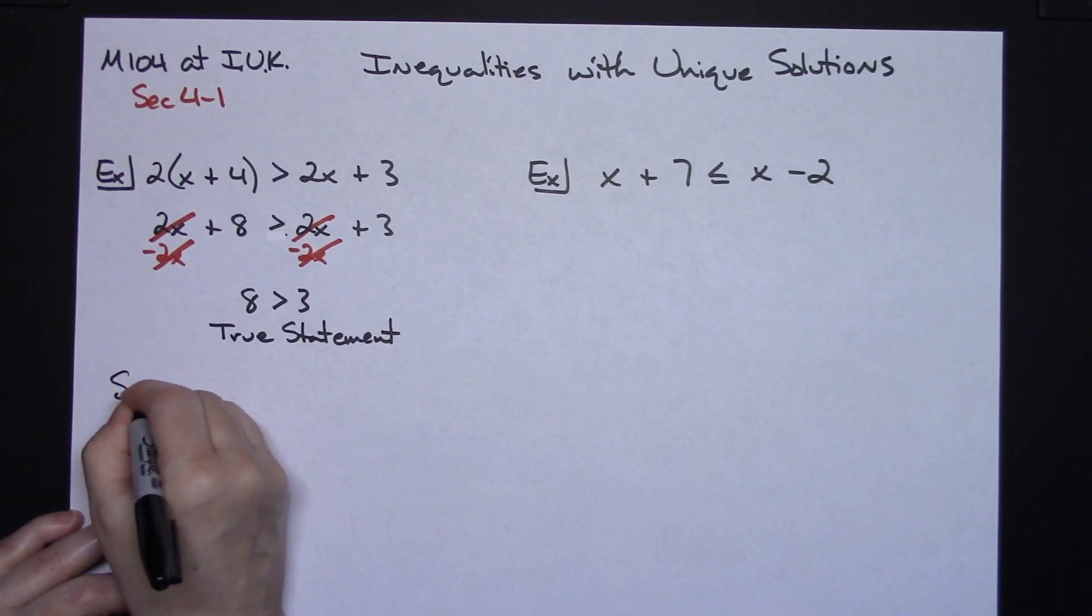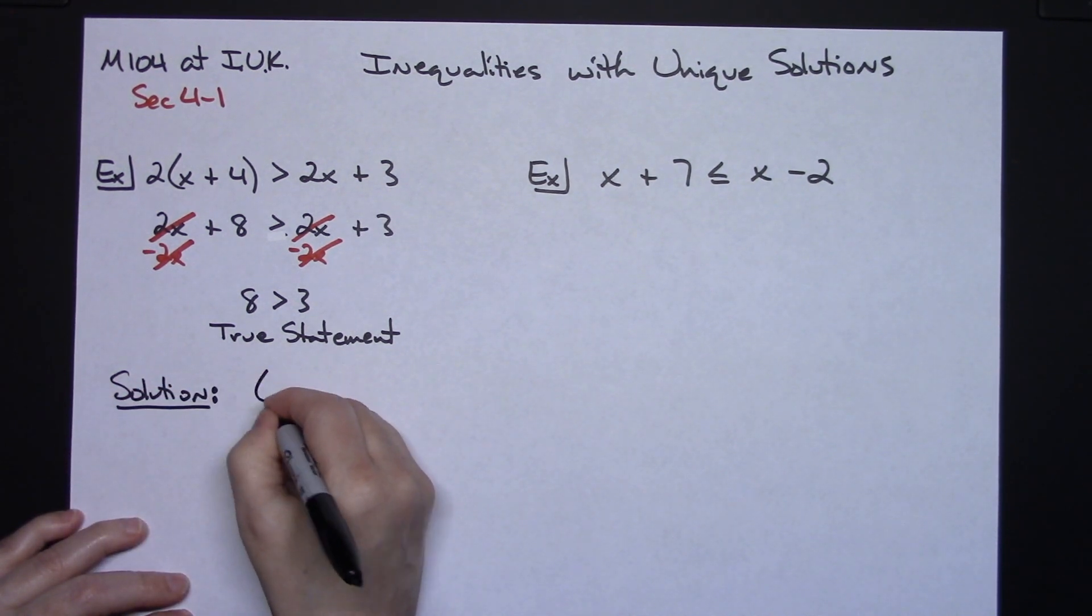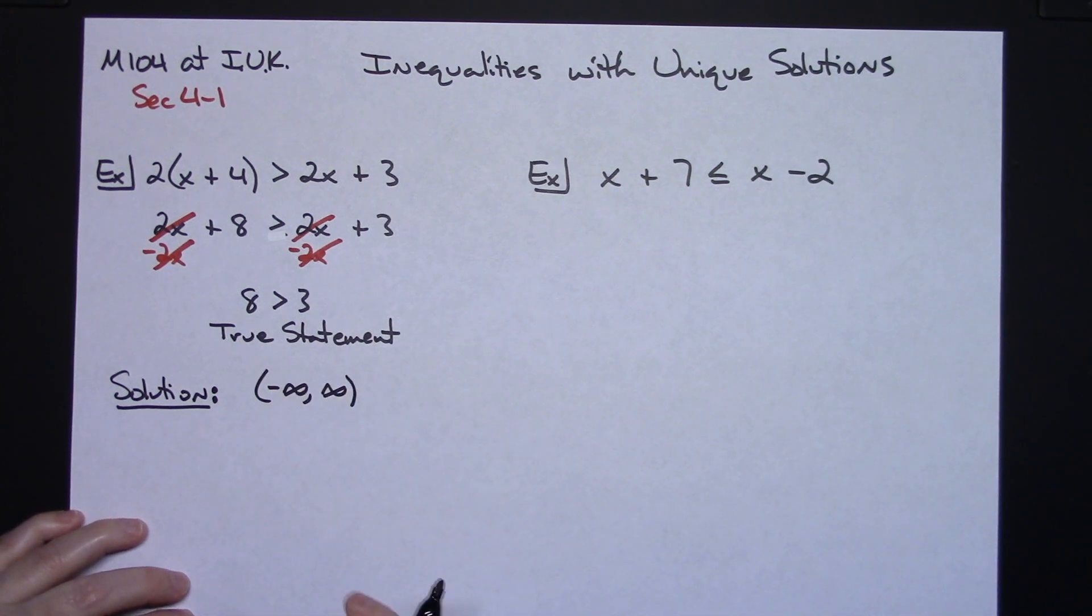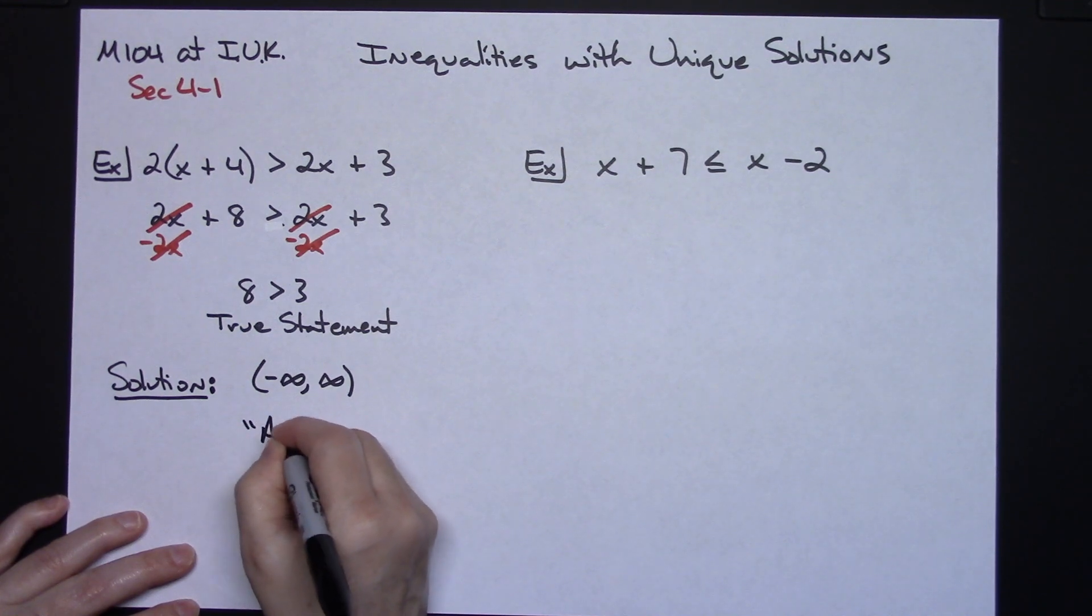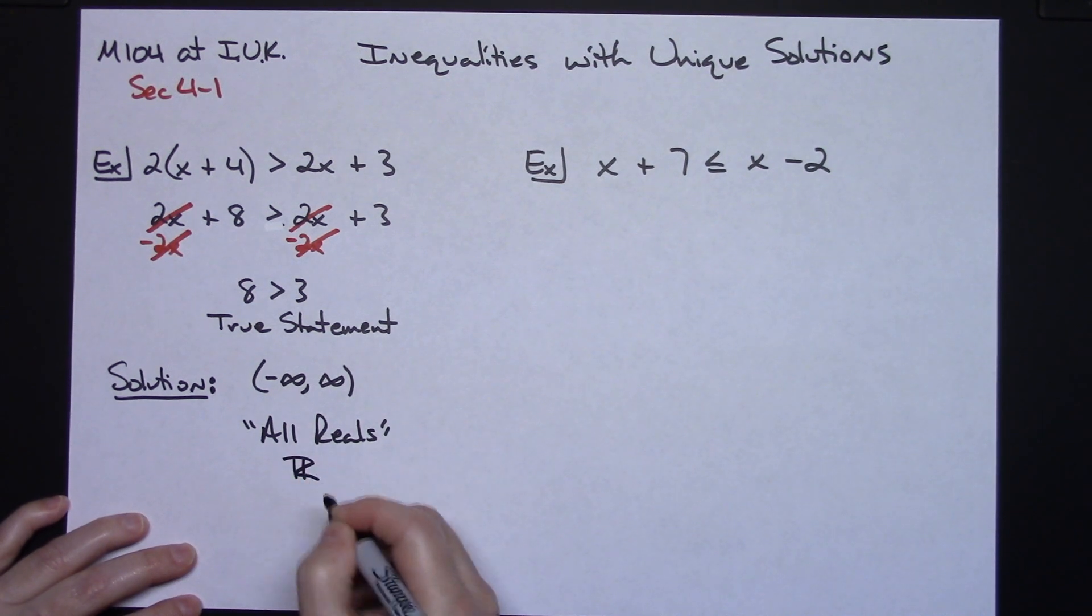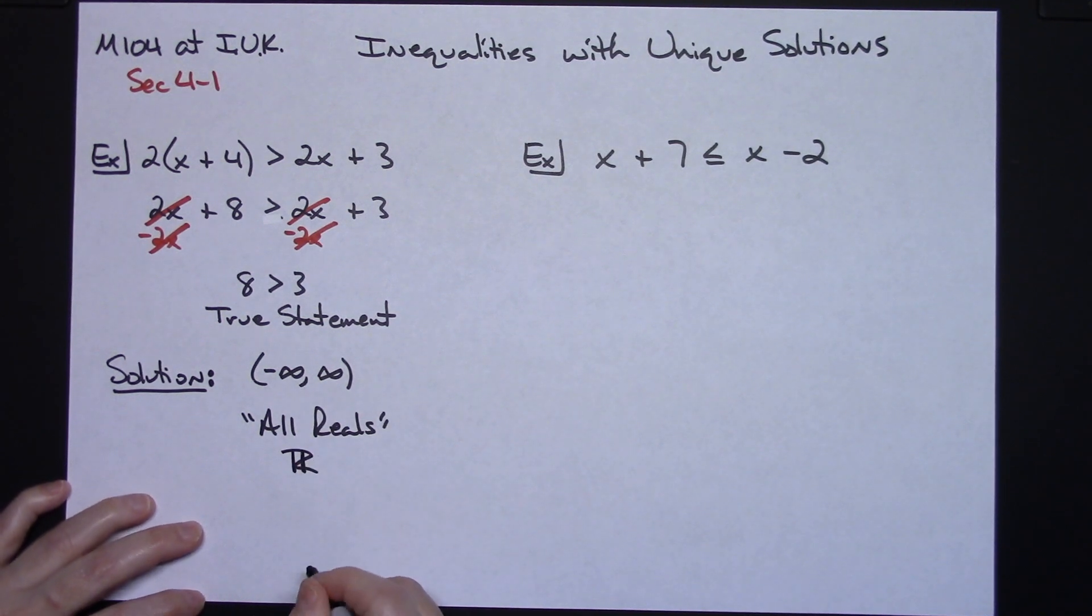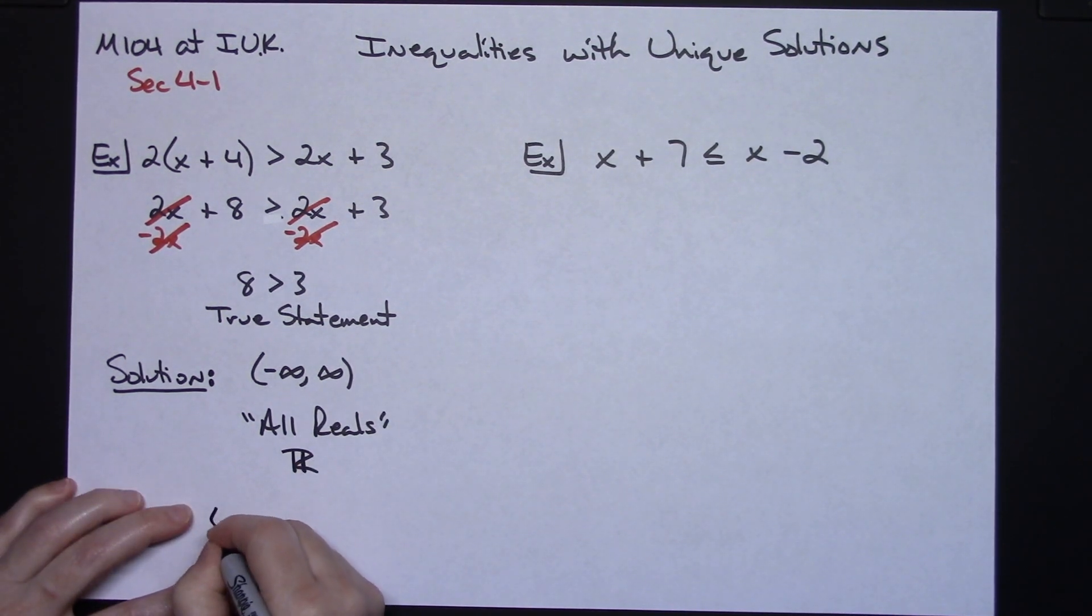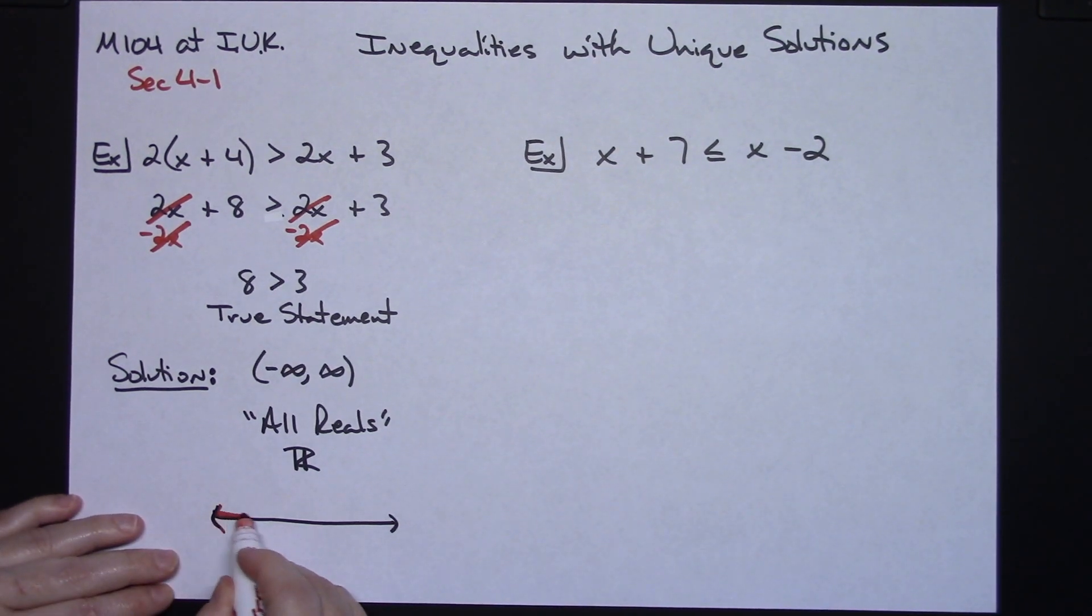So my solution is going to be all real numbers. We have a variety of different ways that we could do this. We could say all real numbers negative infinity to positive infinity in interval notation. I could also write the words all reals, or some people will allow you to do the double R bar. And if you were going to do this on a number line, the entire number line would be shaded because any number is going to work there.